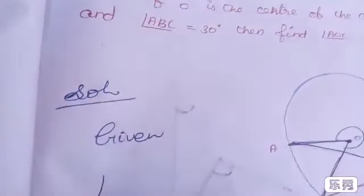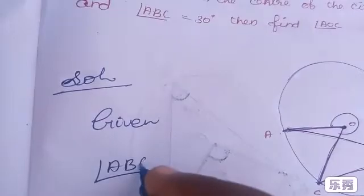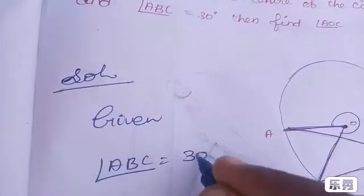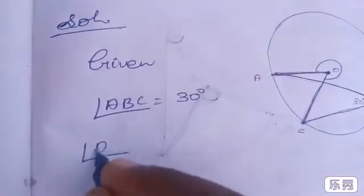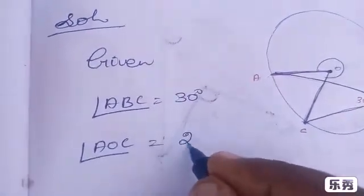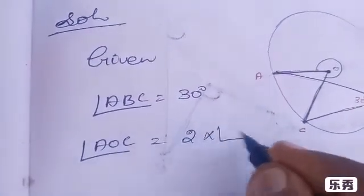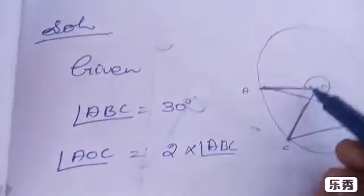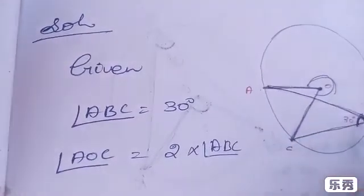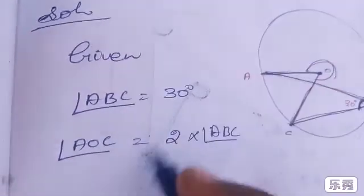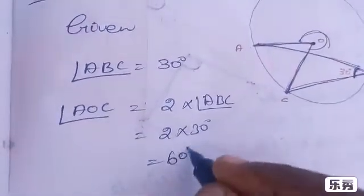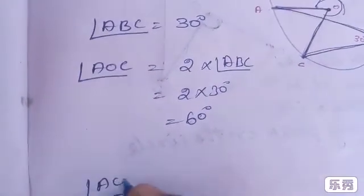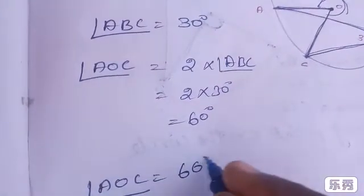Given: angle ABC is equal to 30 degrees. Angle AOC is equal to 2 into angle ABC — the central angle equals twice the inscribed angle. So angle AOC equals 2 into 30 degrees, which comes to 60 degrees. Therefore angle AOC is equal to 60 degrees.